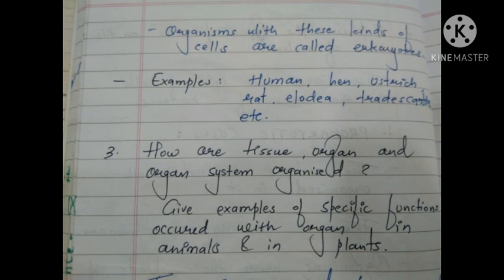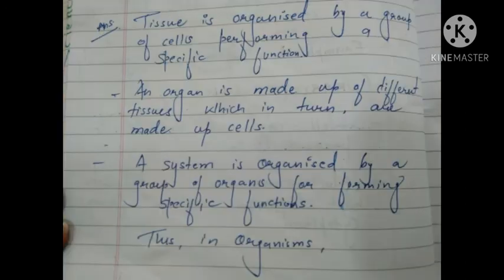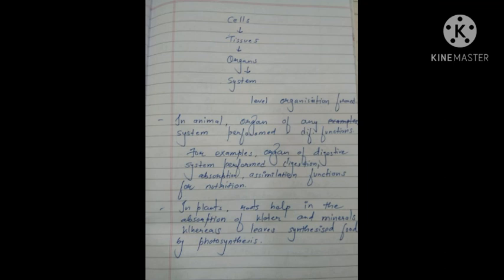Eukaryotic cells have a well-organized nucleus and a nuclear membrane that separates the nucleus from the cytoplasm — examples are humans, ostrich, Tradescantia, etc. Third question: how are tissues, organs, and organ systems organized? A tissue is organized by a group of cells performing a specific function. An organ is made up of different tissues, and a system is organized by a group of organs performing a specific function. In animals, for example, organs of the digestive system perform digestion, absorption, and assimilation. In plants, roots help in absorption of water and minerals, while leaves synthesize food by photosynthesis.